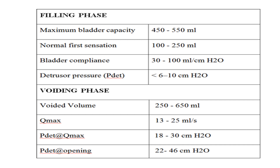Regarding normal values: the detrusor pressure maximum during flow should lie between 18 to 30 centimeters of water. The contraction opening pressure — the initial pressure at which detrusor contraction starts — should lie between 22 to 46 centimeters of water. Thank you so much for your patient listening. I hope this benefits students in understanding urodynamic graphs and makes their OSCE stations regarding graphs a bit easier.